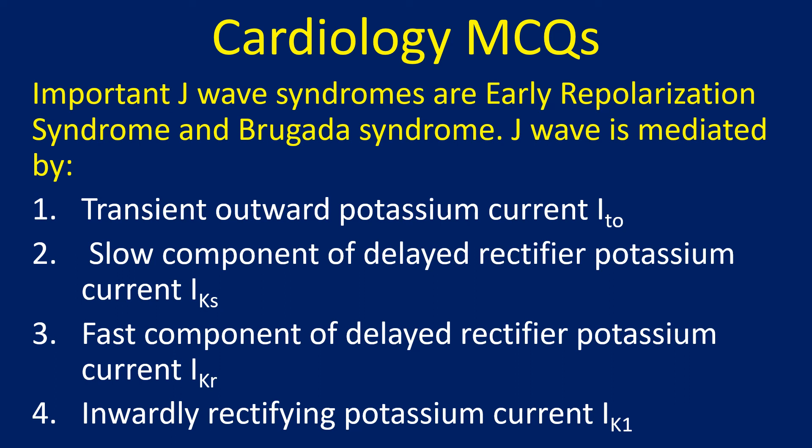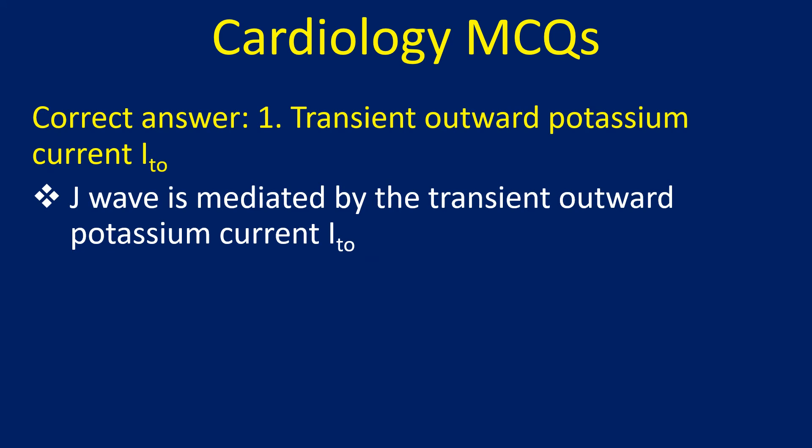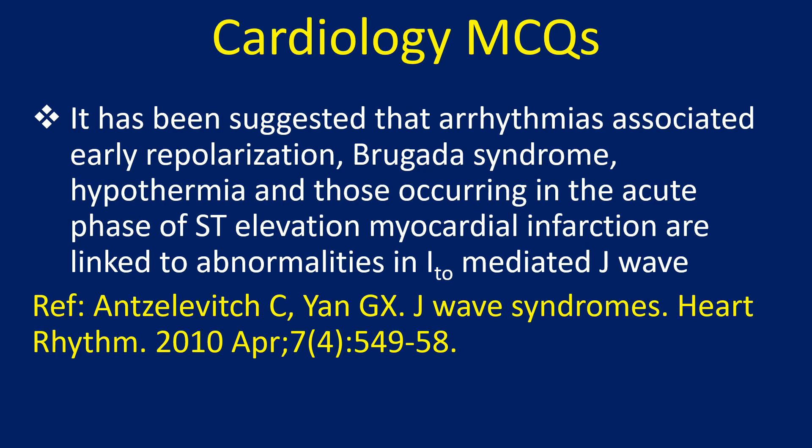Important J wave syndromes are early repolarization syndrome and Brugada syndrome. J wave is mediated by: 1. Transient outward potassium current ITO, 2. Slow component of delayed rectifier potassium current IKS, 3. Fast component of delayed rectifier current IKR, 4. Inwardly rectifying potassium current IK1. Correct answer: 1. Transient outward potassium current ITO. J wave is mediated by ITO. It has been suggested that arrhythmias associated with early repolarization, Brugada syndrome, hypothermia, and those occurring in the acute phase of ST elevation myocardial infarction are linked to abnormalities in ITO-mediated J wave.